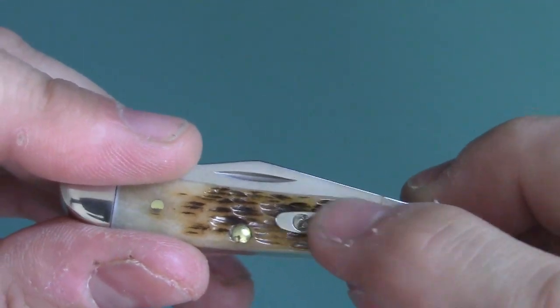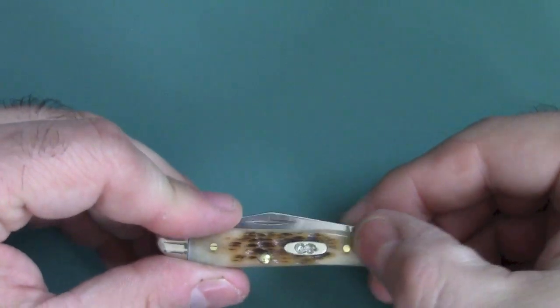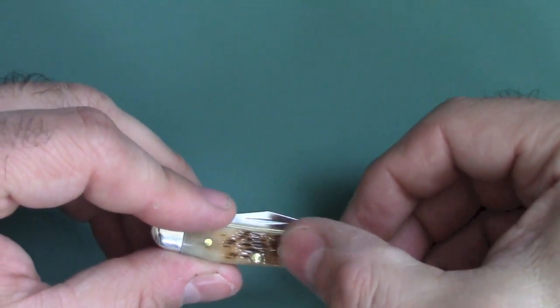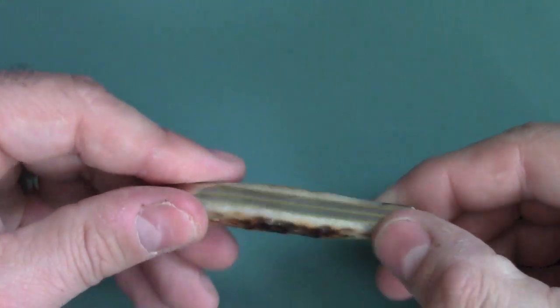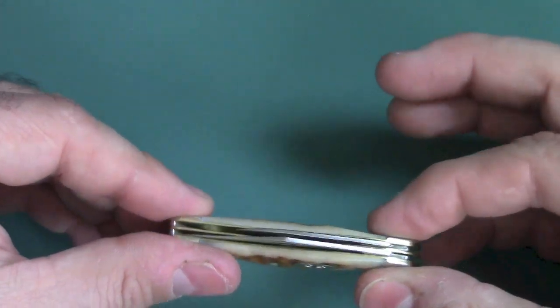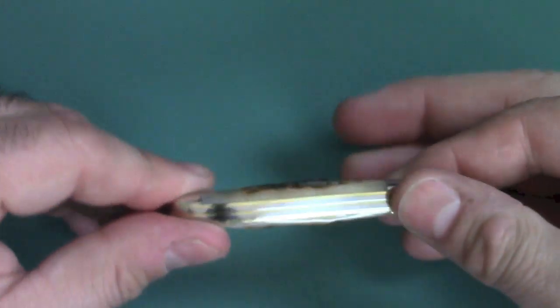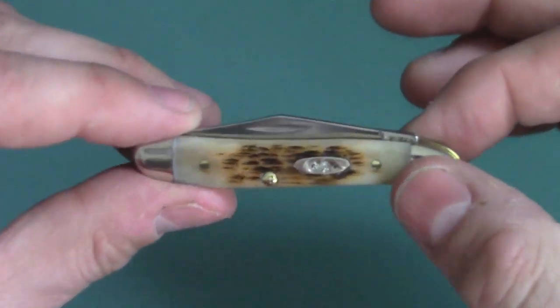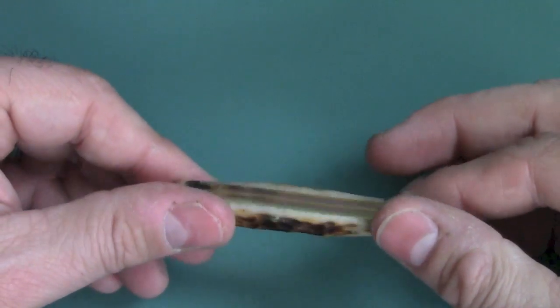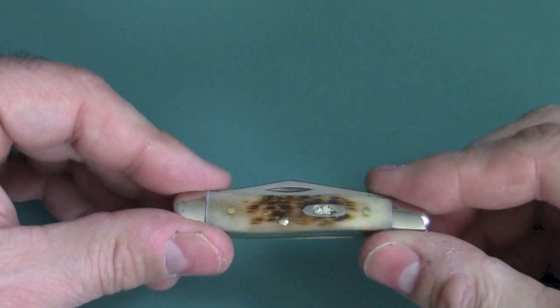So some people say that with use, eventually, these will pop out and you'll end up with a hole in there. I don't know. I usually don't carry these type of knives. But if anybody has carried one of these with the un-pinned shield, go ahead and comment below how that's worked out for you.